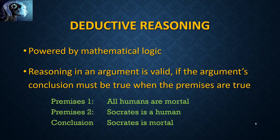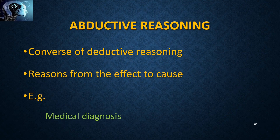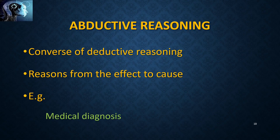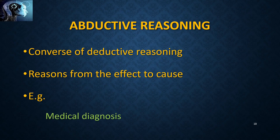However, abductive reasoning is the opposite of deductive reasoning. Here, we select the most suitable premise based on the conclusion. For example, in medical diagnosis, doctors know about the symptoms of a disease. According to these symptoms, they can identify the reason or the disease. For one symptom there may be several matching diseases. Therefore, we can say that doctors use abductive reasoning to identify the premises based on the conclusion.